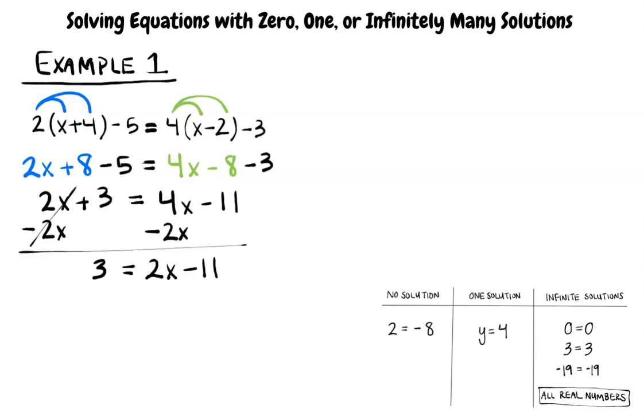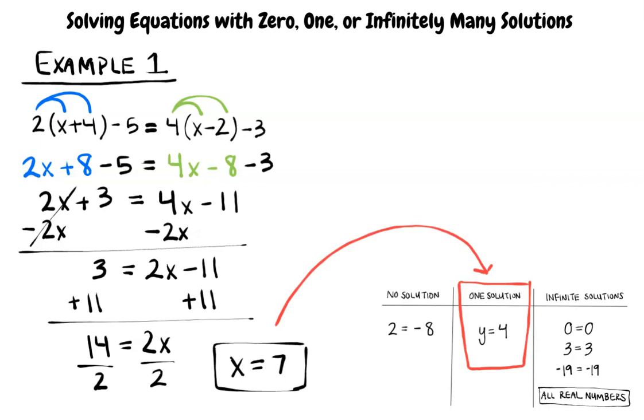Now we can subtract 2x from both sides of the equation so that we will only have one term involving the variable x. This simplifies to 3 equals 2x minus 11. The next step is adding 11 to both sides of the equation. This results in 14 equals 2x. Lastly, we divide both sides by 2. The result is x equals 7. Because the solution is x equals 7, this falls into the one solution category.